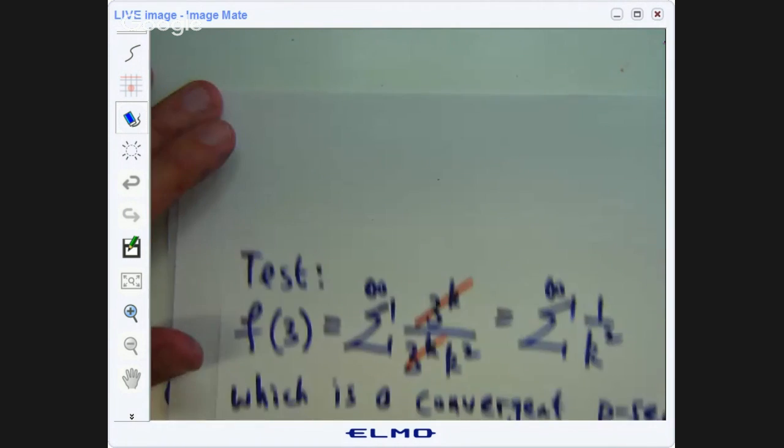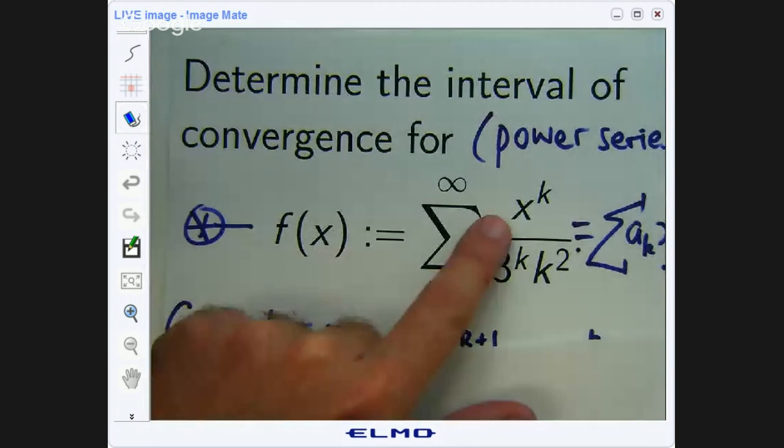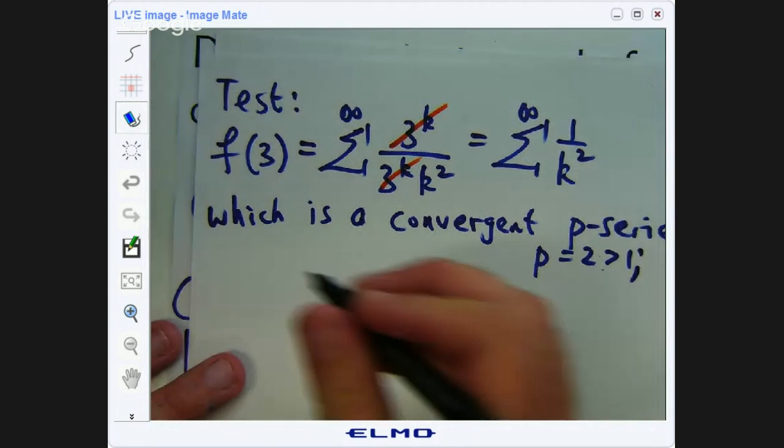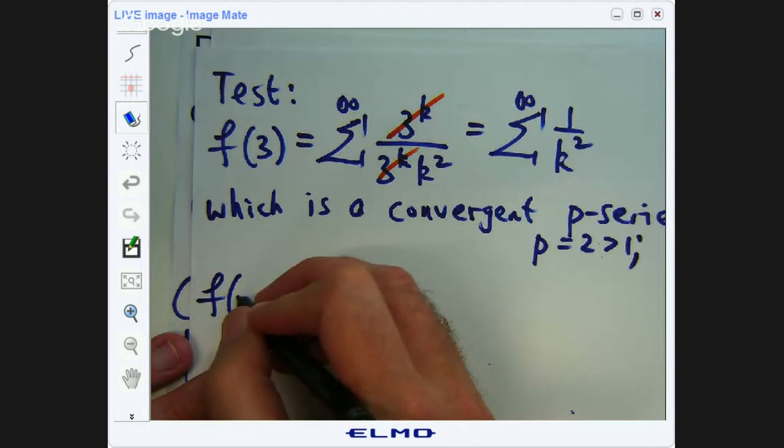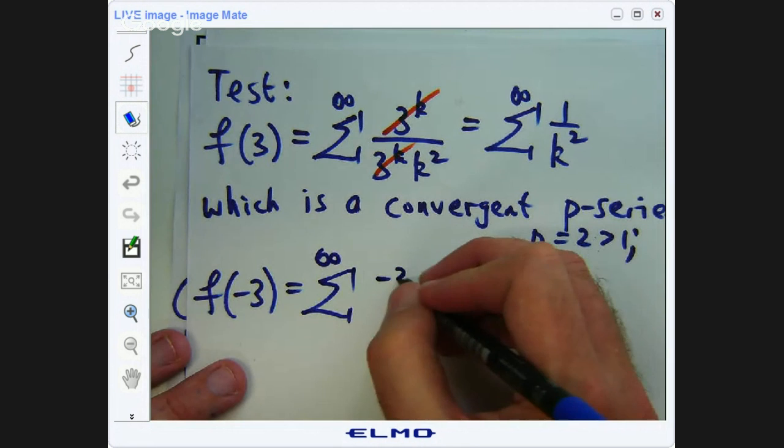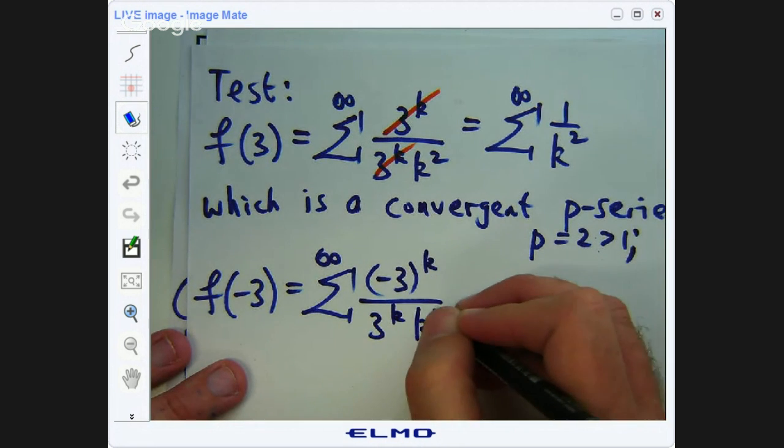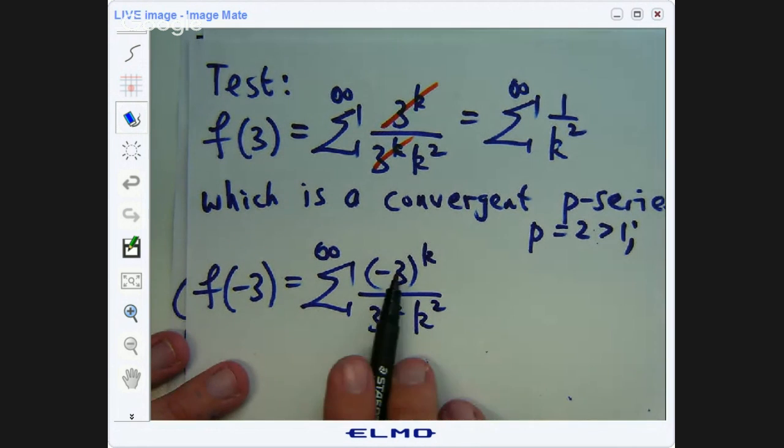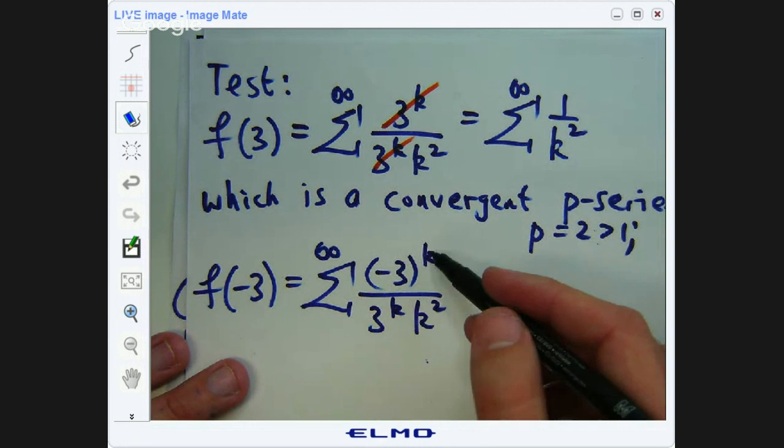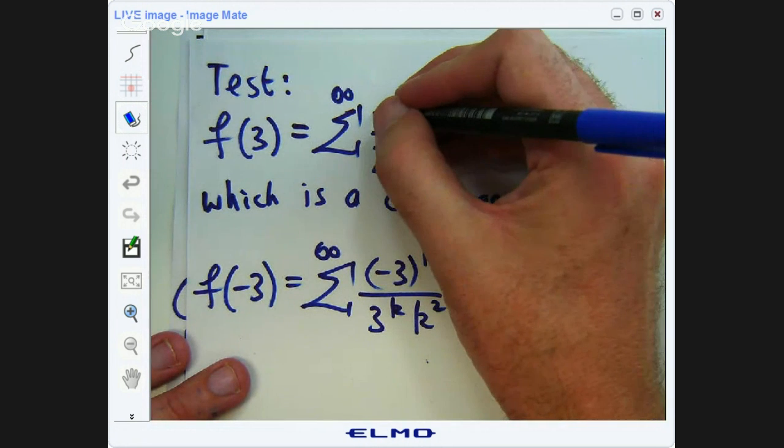We want to replace x with negative 3 in here. So I'm going to get negative 3 to the k. I can take out a negative 1 to the k, and I'm left with negative 1 all to the k times 3 to the k. So that'll cancel out similarly to up here, but you'll just be left with negative 1 to the k.